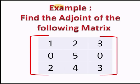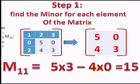For example, let us find the adjoint of the following matrix. Take the square matrix with elements 1, 2, 3, 0, 5, 0, 2, 4, and 3. Step 1: First of all, we have to find the minor of each element of the matrix.